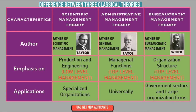Under classical school we have seen three theories: scientific management theory, administrative management theory, and bureaucratic management theory. The author of scientific management theory is F.W. Taylor, who is the father of scientific management. The author of administrative management theory is Henry Fayol, who is the father of general management. And the author of bureaucratic management theory is Max Weber, who is the father of bureaucratic management.